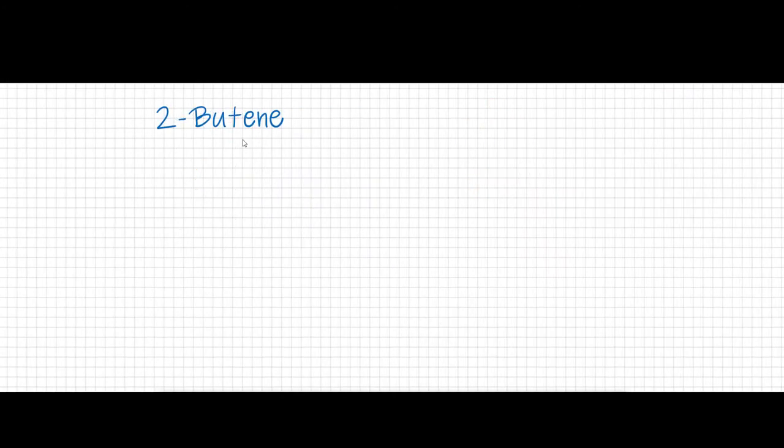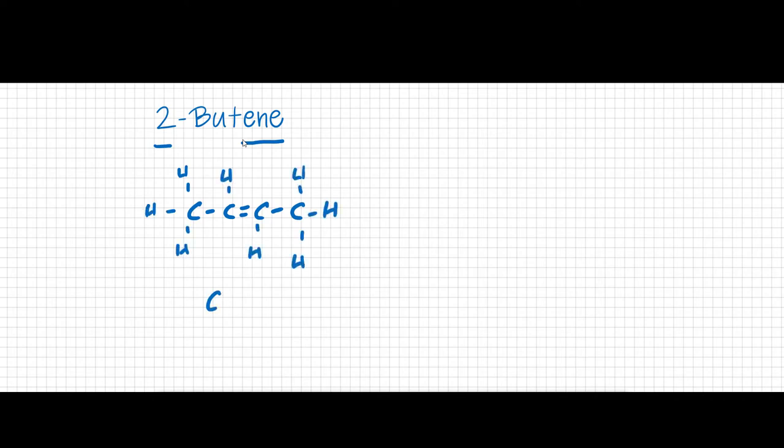2-butene is a little bit different. The E-N-E ending means there is a double bond. So I still have four carbons, but there's going to be a double bond between two of the carbons. And that double bond is happening at carbon number two. So it doesn't matter which way you count from, it's still going to be in the middle here. The other carbons have single bonds, and then you can saturate those with hydrogens. And you get C4H8 instead of the C4H10 that we got for butane.